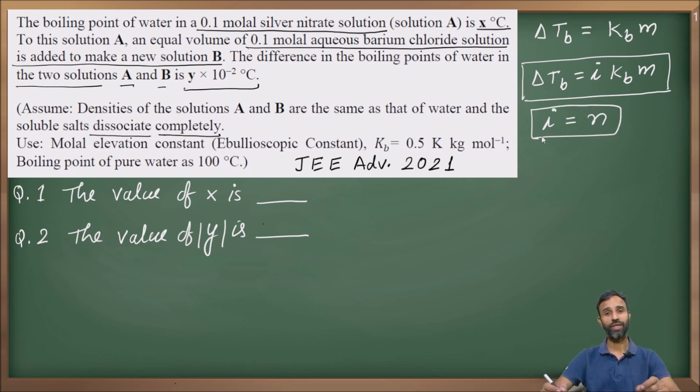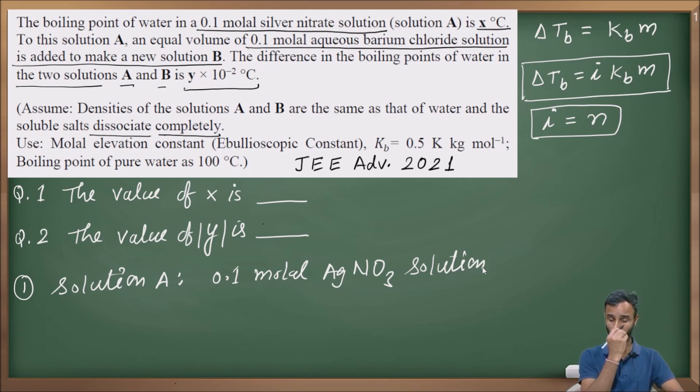If the salts dissociate completely, then i is equal to N. What it means? Van't Hoff factor is equal to number of ions present in the given formula unit. Like solution A is 0.1 molal silver nitrate solution. In this case, molality is given and what is i here? Silver nitrate will give silver ion and nitrate ion. So for this solution i is equal to 2.